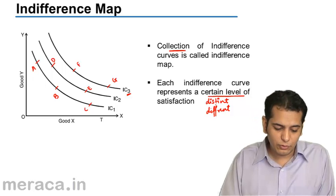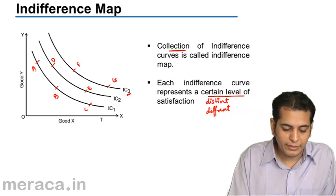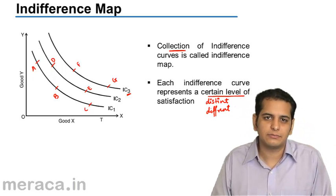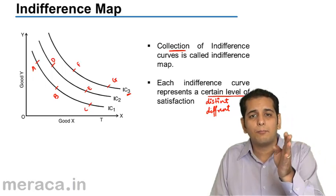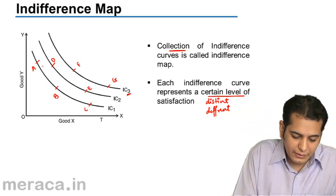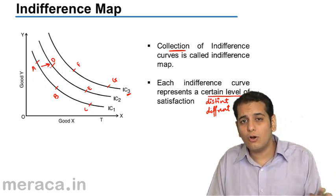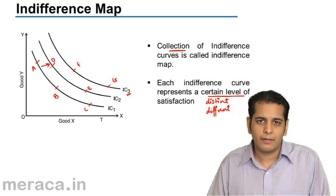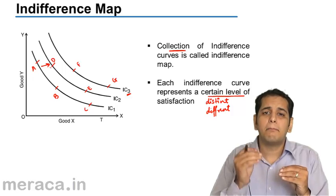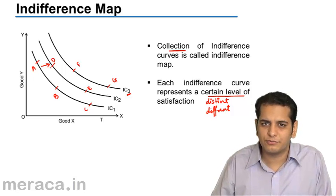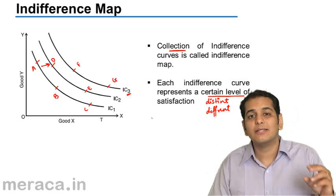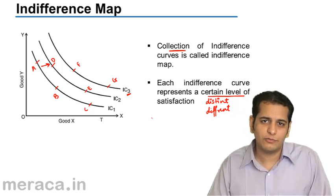But please note that point A and D will give you a different level of satisfaction, because point A lies on IC1 and point D lies on IC2 — they are not on the same indifference curve. When points are not on the same indifference curve, they are bound to give you different levels of satisfaction. In short, two different indifference curves will give you two different levels of satisfaction.